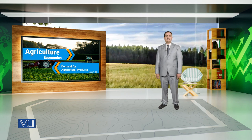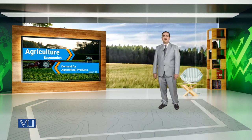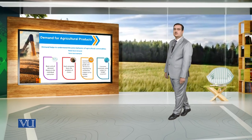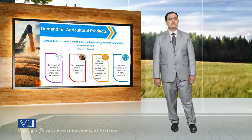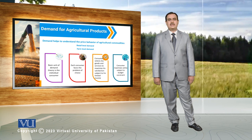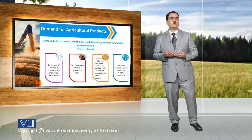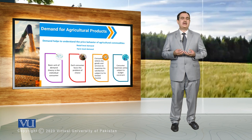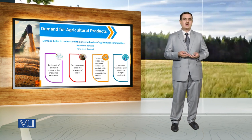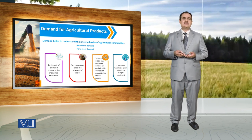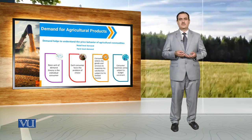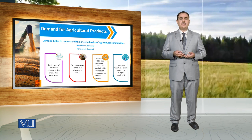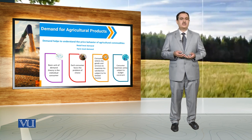Demand for agricultural products refers to the willingness and ability to buy agricultural products. It is demand that helps us understand the price behaviour of agricultural commodities. In the determination of prices of agricultural commodities, demand at the retail level plays an important role. Retail-level demand is the demand for agricultural commodities by consumers in the market — the willingness and ability to buy a particular agricultural product.